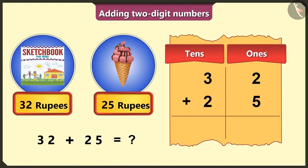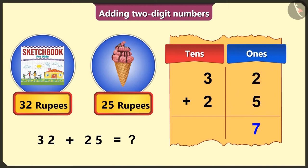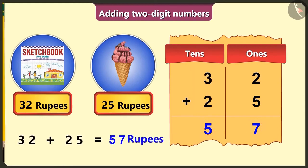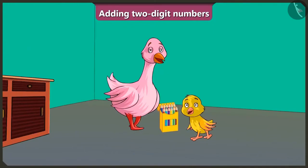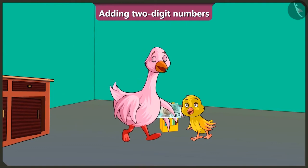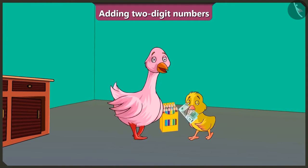Oh wow, Pilu! You got it right! But I still have to do the addition. Now in the ones box, 2 and 5 will add up to form 7. In the tens box, 3 and 2 will add up to form 5. So, Aunty, you have to give me a total of 57 rupees. That's great, Pilu — you made the right calculation. Take 57 rupees. Yes, give it to me, Aunty. I will go right now and get my sketchbook and ice cream from the market. Ok, dear Pilu. Bye!